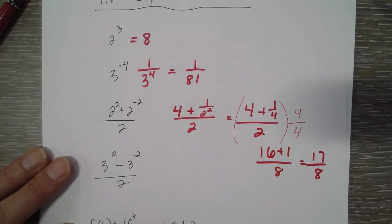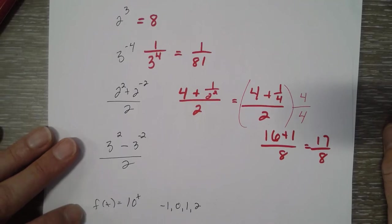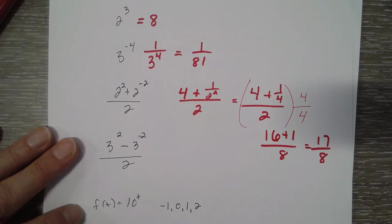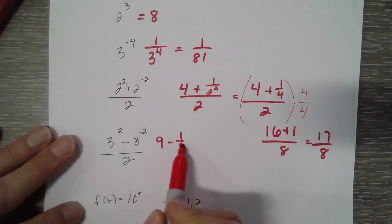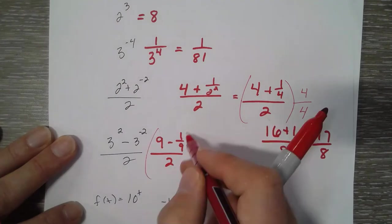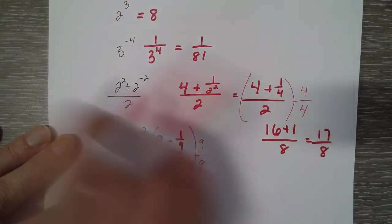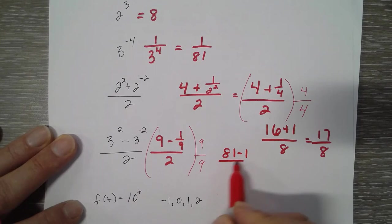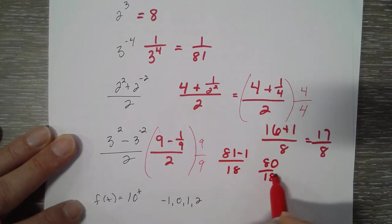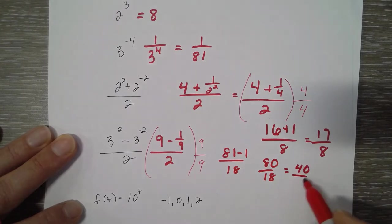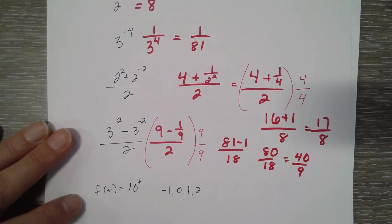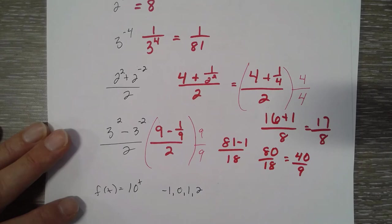17/8. Next: 3 squared is 9, minus 1 over 9 over 2. We multiply top and bottom by 9, giving us 81 minus 1 over 18, or 80 over 18, which reduces to 40 over 9, which is about 4.444.